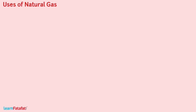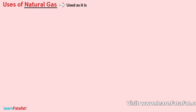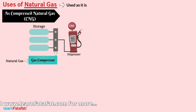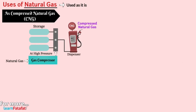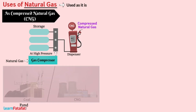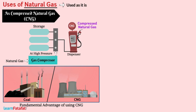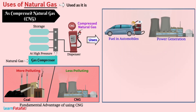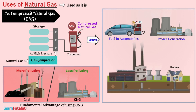Uses of natural gas: unlike petroleum, natural gas can be used as it is. As compressed natural gas, natural gas stored at high pressure is known as CNG. A fundamental advantage of using CNG is that it is less polluting. It is used as fuel in automobiles and for power generation. It is also transported to homes and factories through pipes where it is used as fuel.